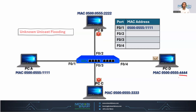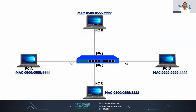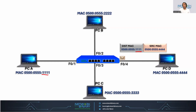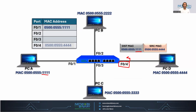Now PCD is going to perform the reply communication by making the layer 2 header. What is the source MAC address? It uses its own MAC address, and the destination MAC address is going to be PCA's MAC address. The frame has been generated and is sent to the switch. The switch has learned the frame on its interface 0/4, by de-encapsulating the layer 2 header and adding that MAC address inside its CAM table on interface 0/4.